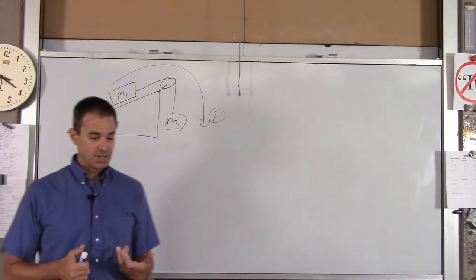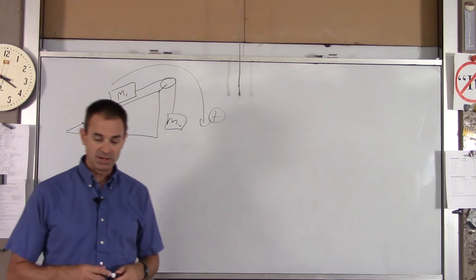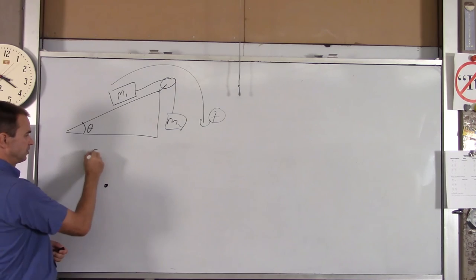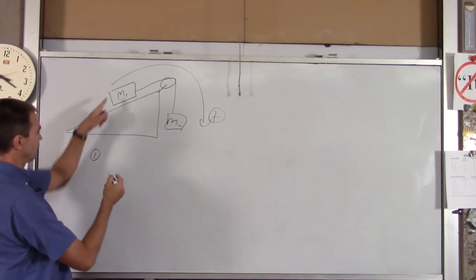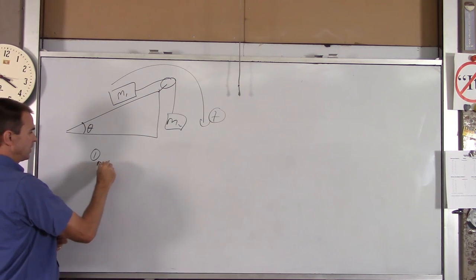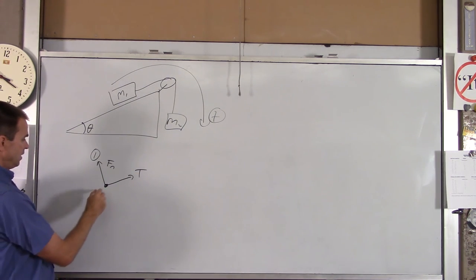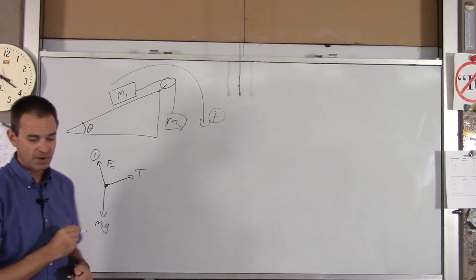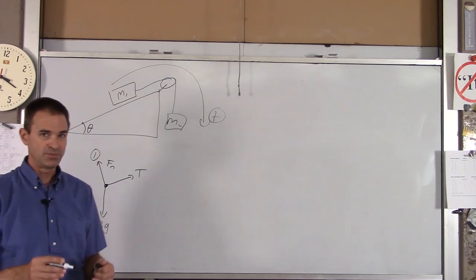So we're going to start by drawing an FBD of each object. We'll start with the block that's on the incline. And for now, we're going to say there's no friction. So here's block one. We'll just give it a little dot for its mass. And the forces that act on it are the normal force, the incline holding it up, the tension in the string, and the force of gravity, which is m1g. Notice I put m1 there, not just mg, because there's two masses in the situation. You don't want to confuse them later on.